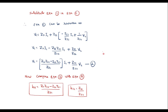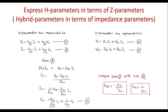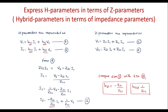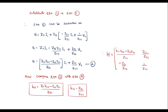Now I can write the H matrix: H11 = (z11·z22 − z12·z21)/z22, H12 = z12/z22, H21 = −z21/z22, and H22 = 1/z22. Thus we have expressed H parameters in terms of Z parameters.